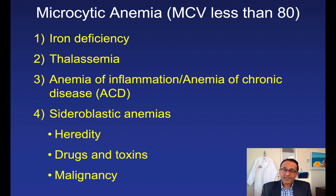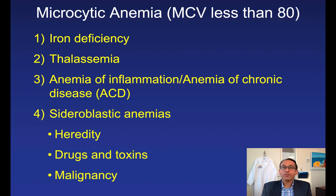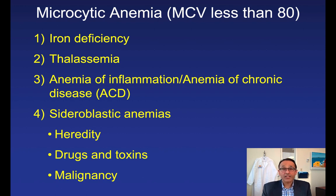A second cause is thalassemia. Usually we rely upon hemoglobin electrophoresis for that, but you can also look at the thalassemia index, which is MCV over RBC count. If the MCV over RBC count is greater than 13, it's more likely to be iron deficiency anemia. If it's less than 13, then it's consistent with thalassemia.